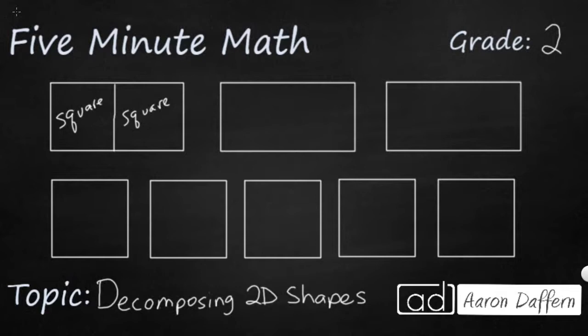What if I wanted to cut it in half this way? I've got a horizontal line, but as you can see I don't have squares — I have rectangles. So you can take any two rectangles, stack them on top of each other, and you will have a larger rectangle.